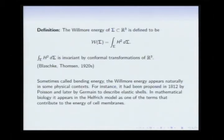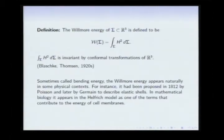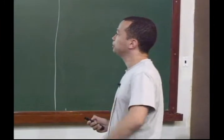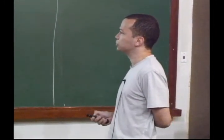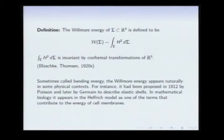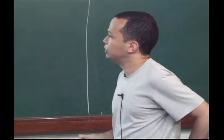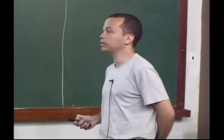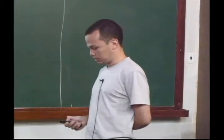This energy appears connected to several physical contexts. In 1812, Poisson used this expression to describe the energy of an elastic membrane in Euclidean 3-space — so it appears in elasticity theory. It also appears in the work of Germain. More recently, this quantity appears in mathematical biology as the Helfrich model, as one of the terms in the definition of the energy of a cell membrane — in elasticity and mathematical biology.